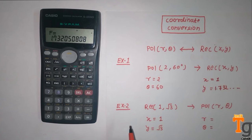Now comes to example 2. Here we will convert the rectangular form to polar form. It is also the same to enter into the calculator.